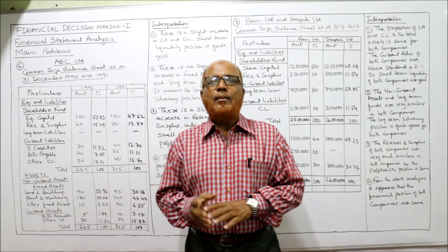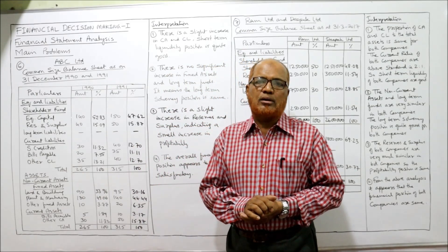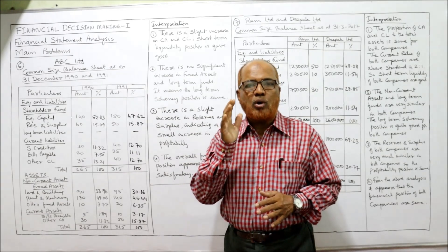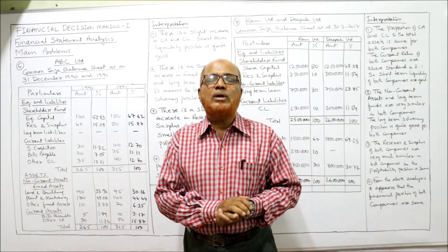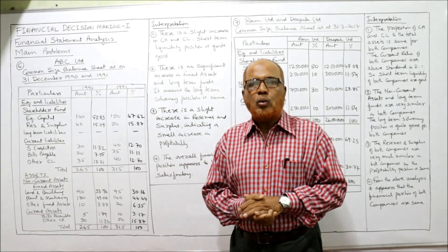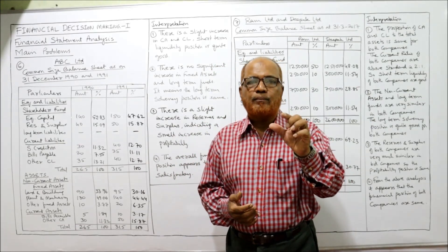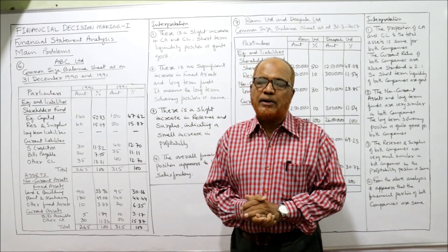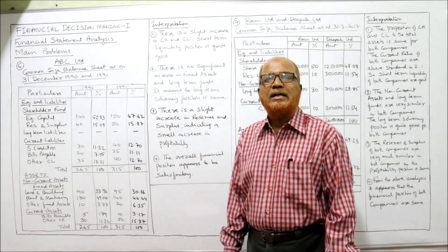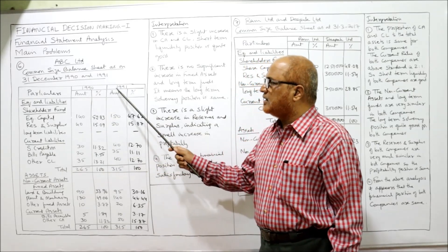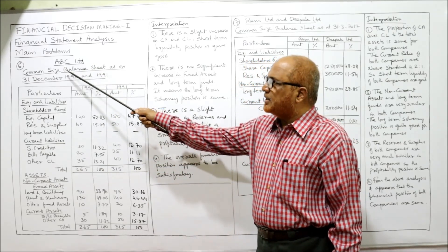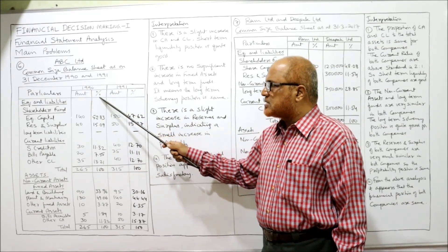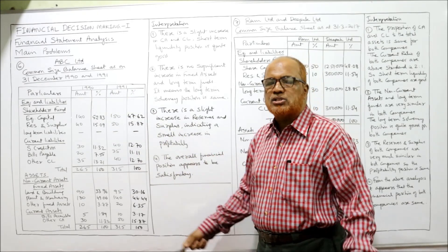Making the common size statement calculations is very easy, but the key thing is interpretation. My suggestion: give more concentration and focus on how to give the interpretation. You must know how to relate the items for giving the interpretation. In this problem, two years' data is given — 1990 and 1991.